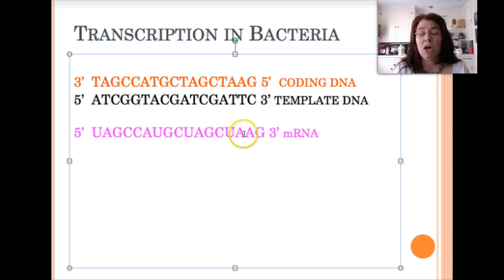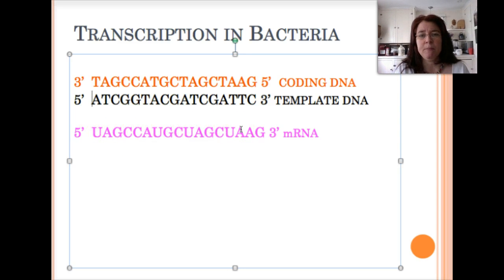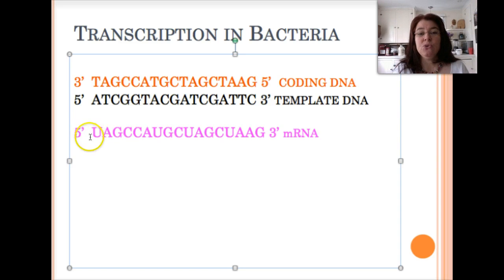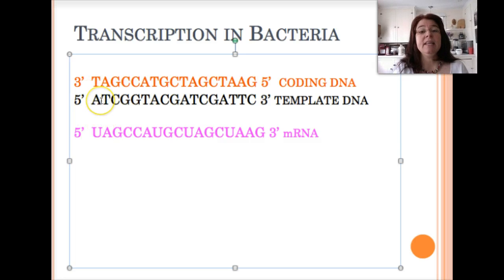The purple-colored sequence at the bottom represents an mRNA molecule. It is oriented in the same direction as the template and is complementary to it. The only difference is that we have U's in the mRNA instead of T's — there is no thymine in RNA. Everywhere there's an A in the template strand, we have a U in the RNA; where there's a T, we have an A; where there's a C, we have a G; and where there's a G, we have a C.